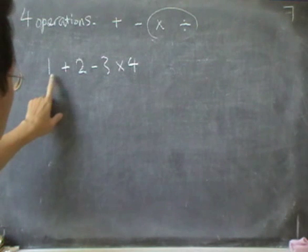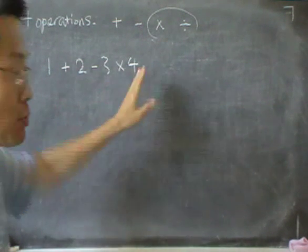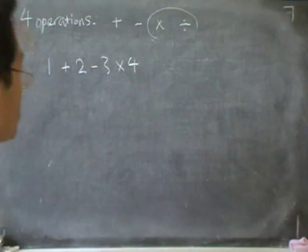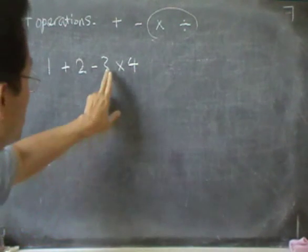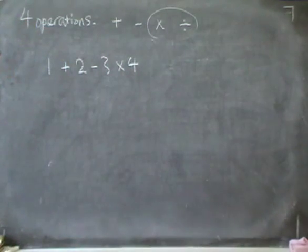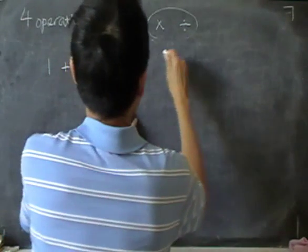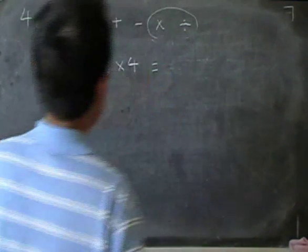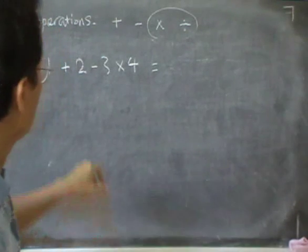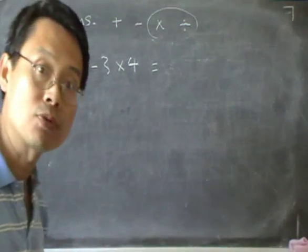That means if you do 1 + 2 - 3 × 4 in that order, that would be wrong. You must do the times operation first. So in this case, the correct thing to do is to do the 3 × 4 first.